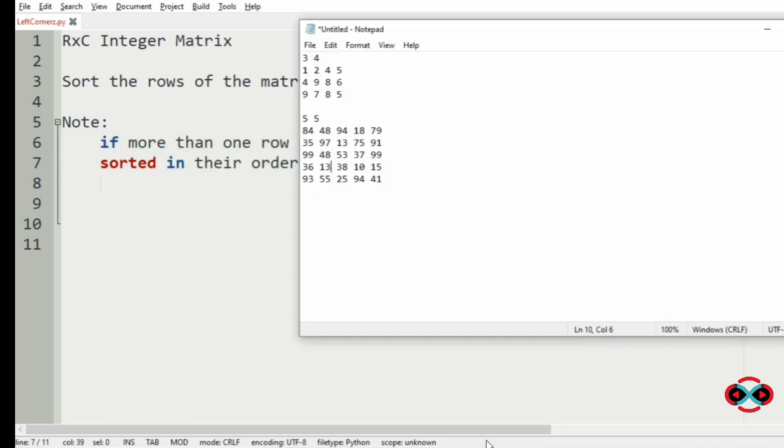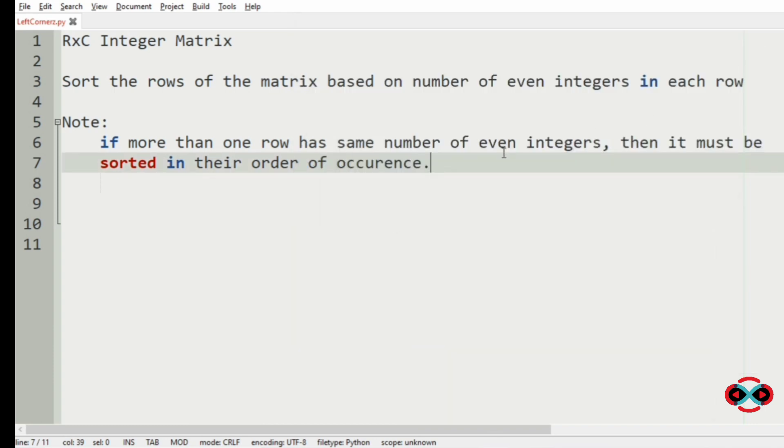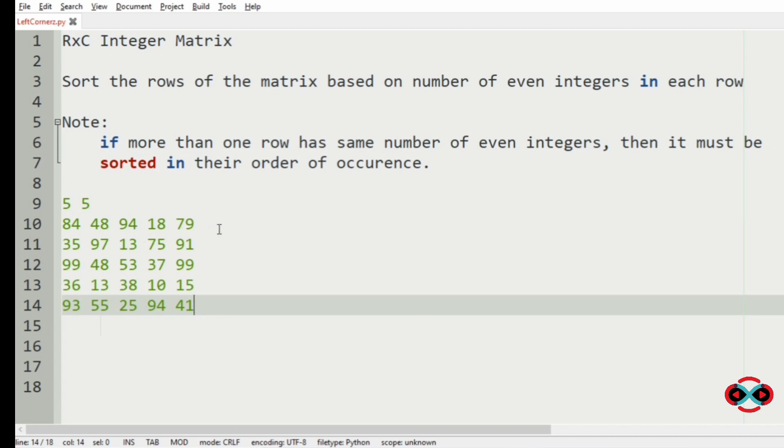Consider our first test case. One test case is enough for the clear idea. So in this test case, in the first row, you can see that the number of even integers are 1, 2, 3 and 4.